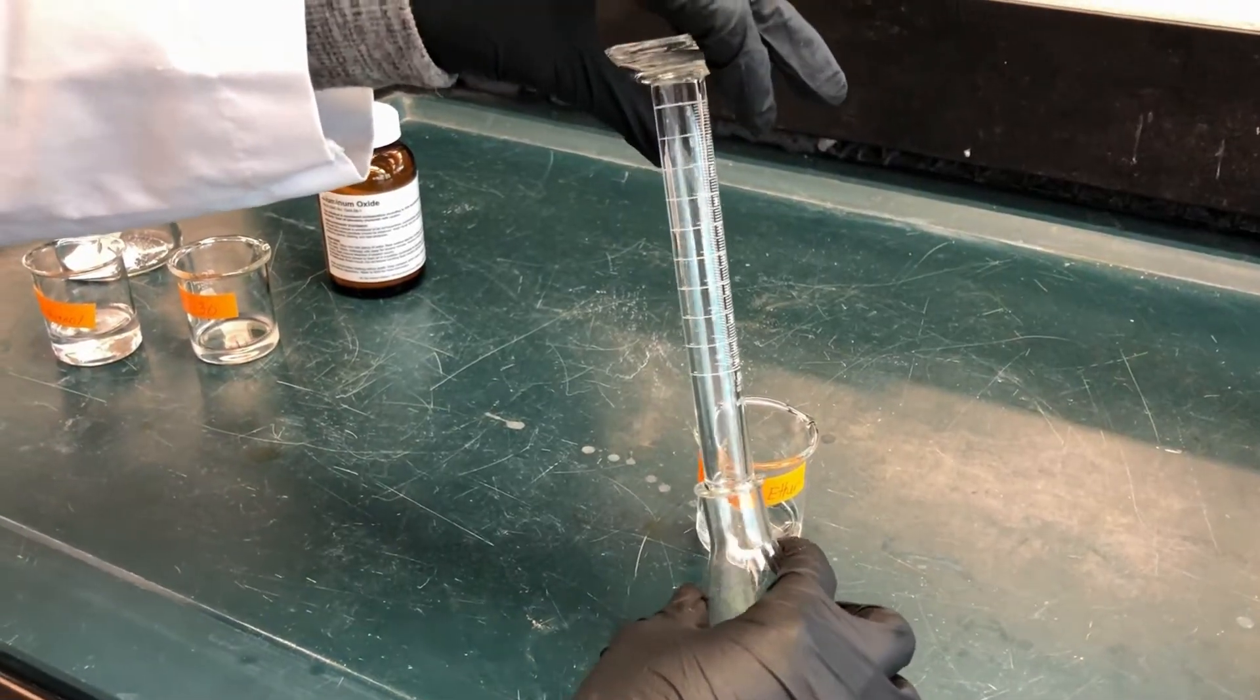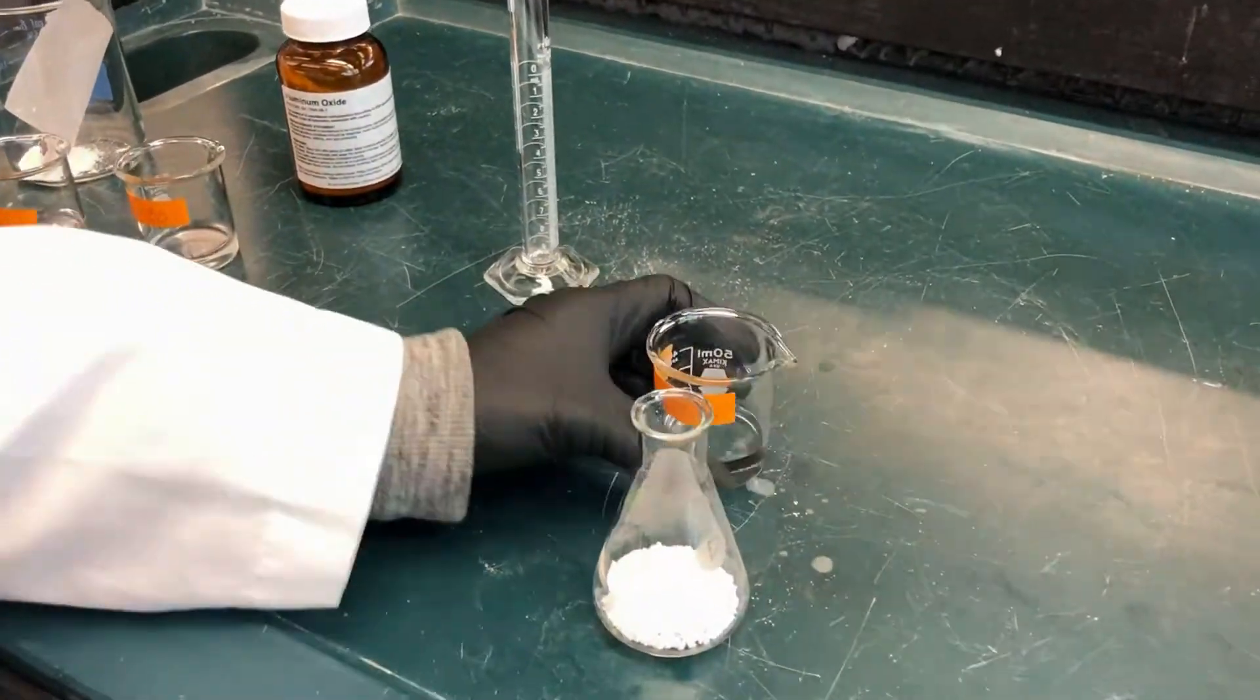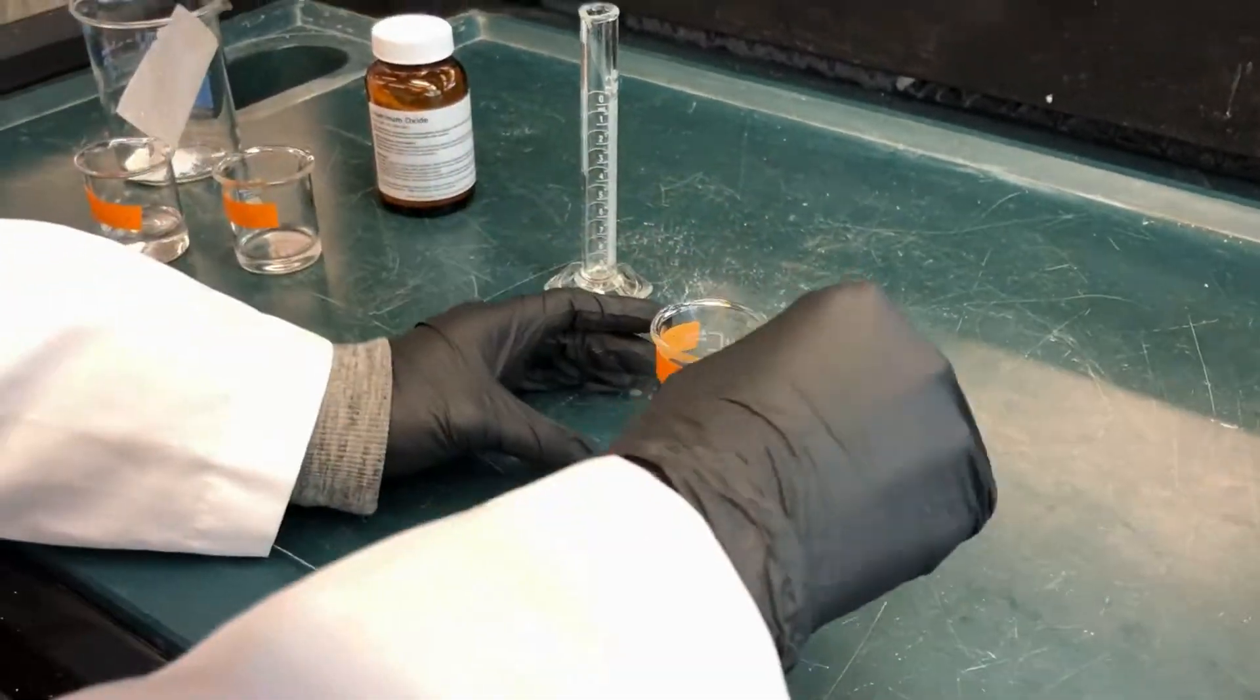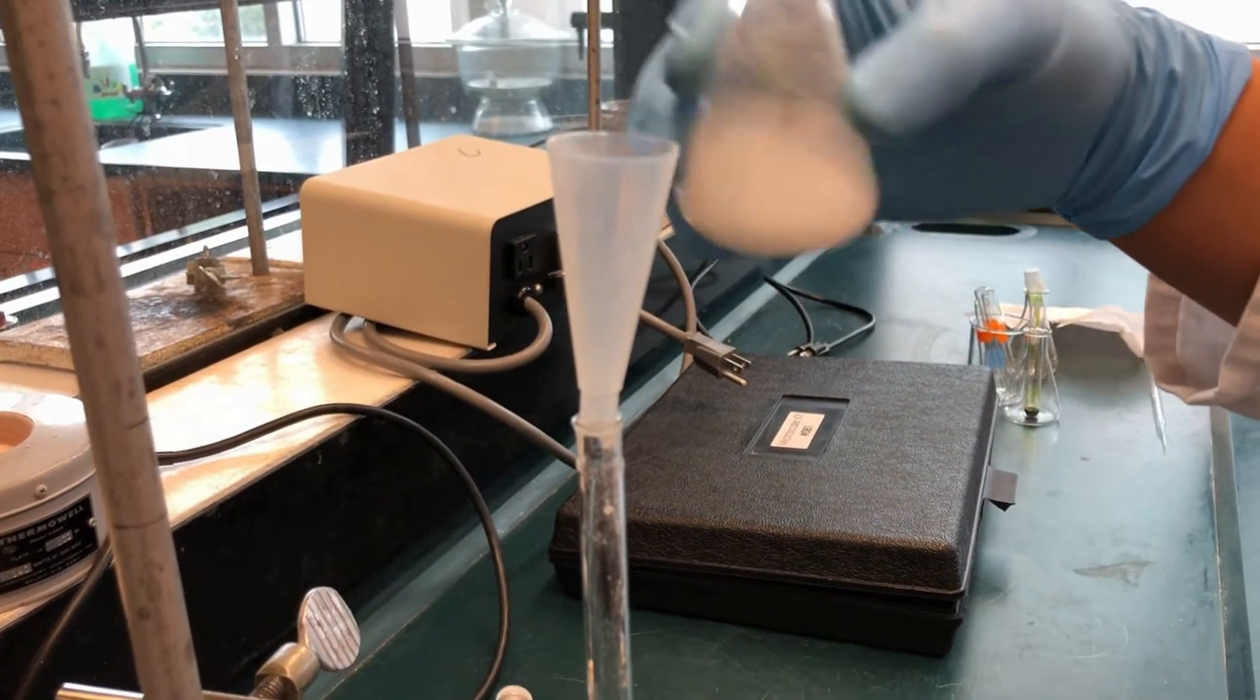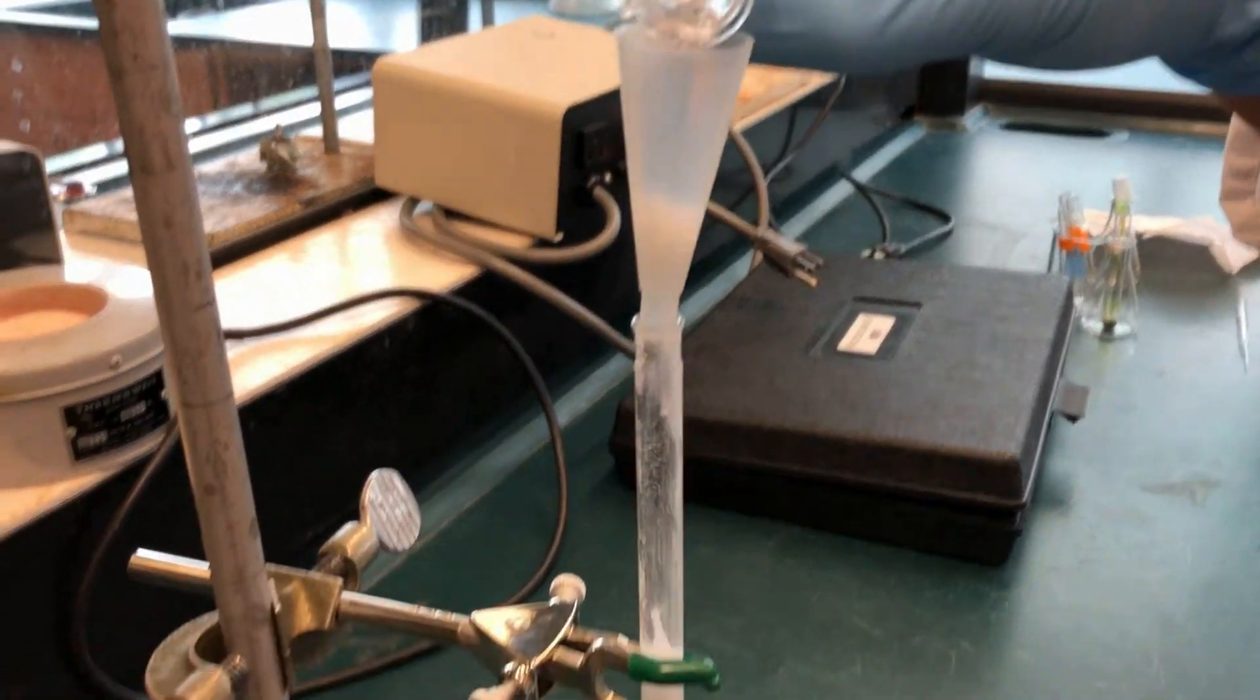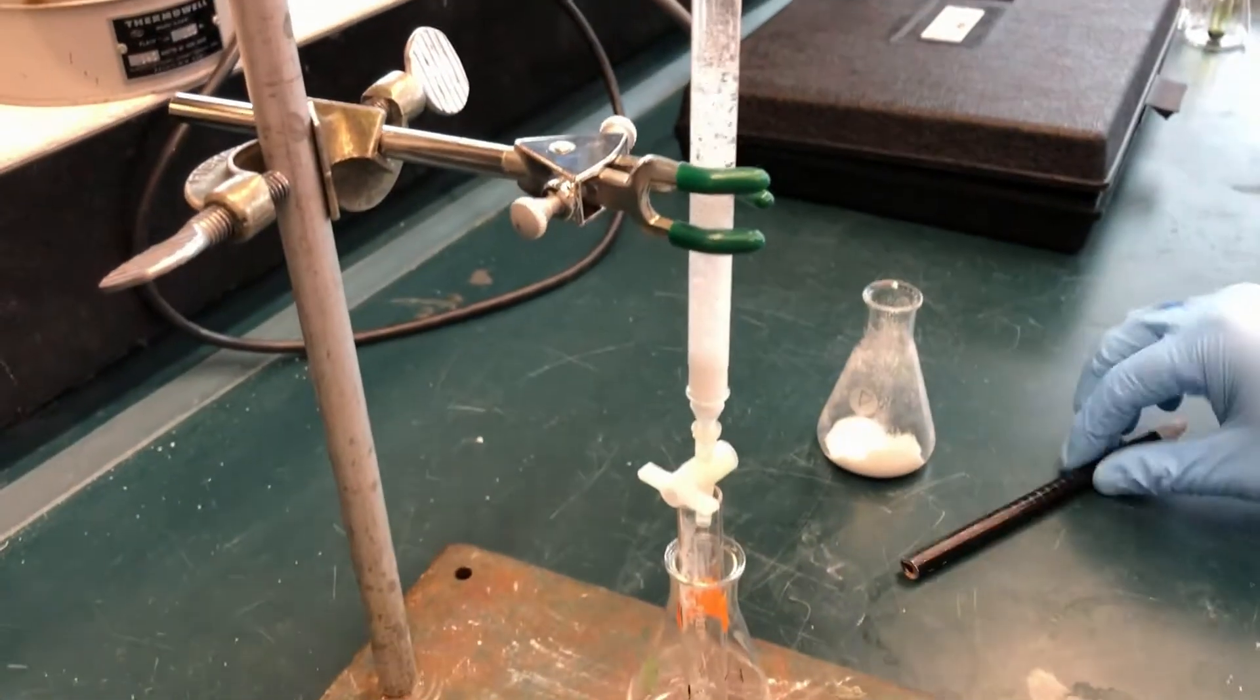Transfer the alumina into a flask. Add petroleum ether and mix. In order to successfully prepare your alumina in the column, pour it into the column while mixing so the solid does not settle to the bottom of the flask.